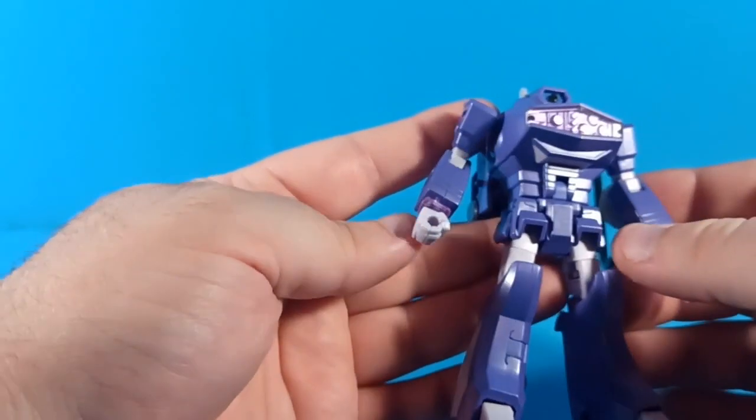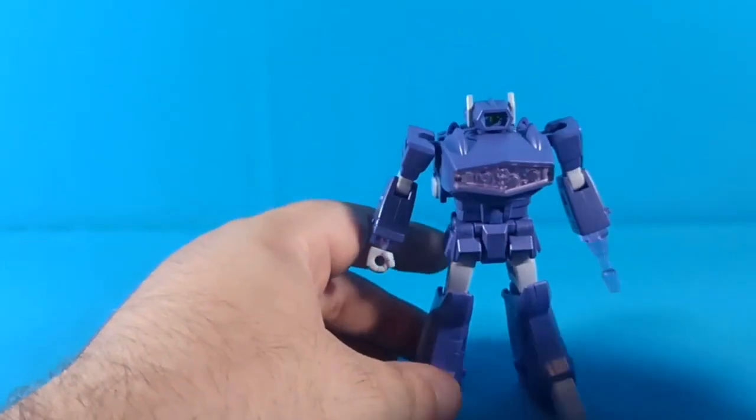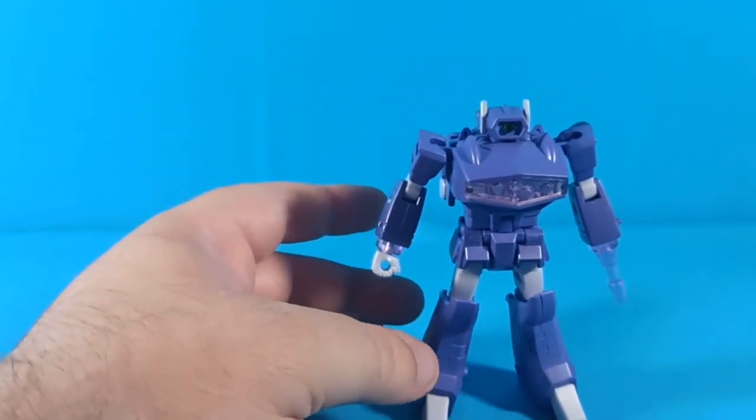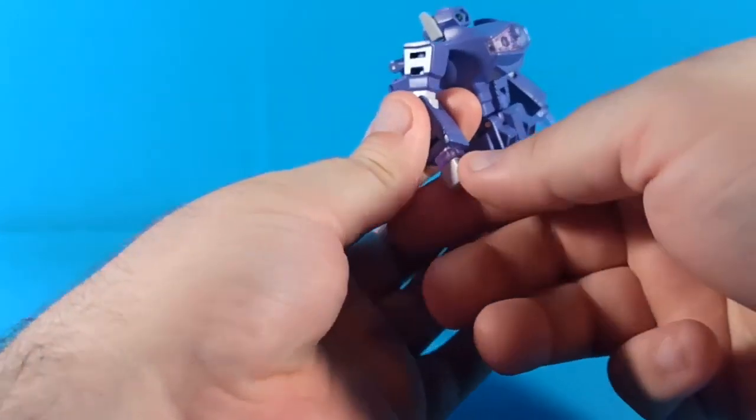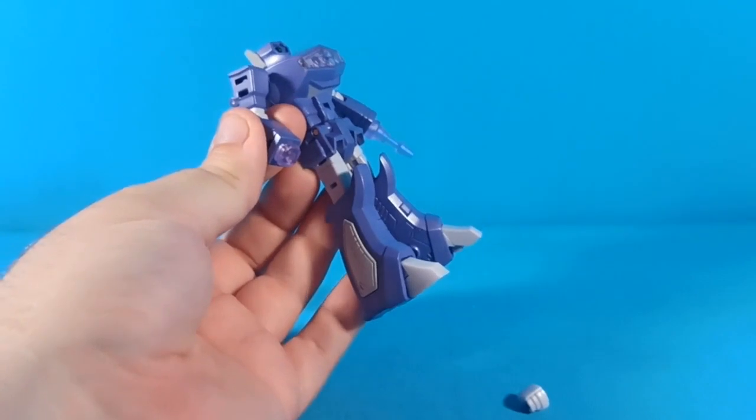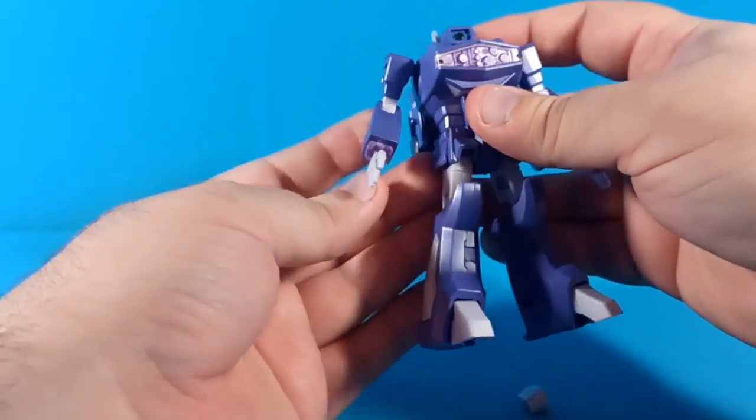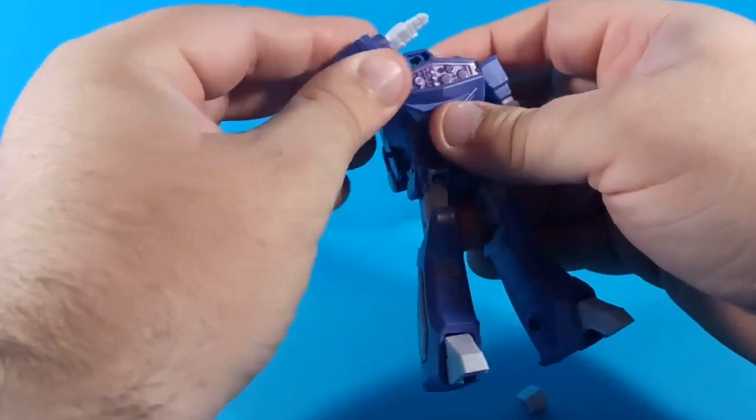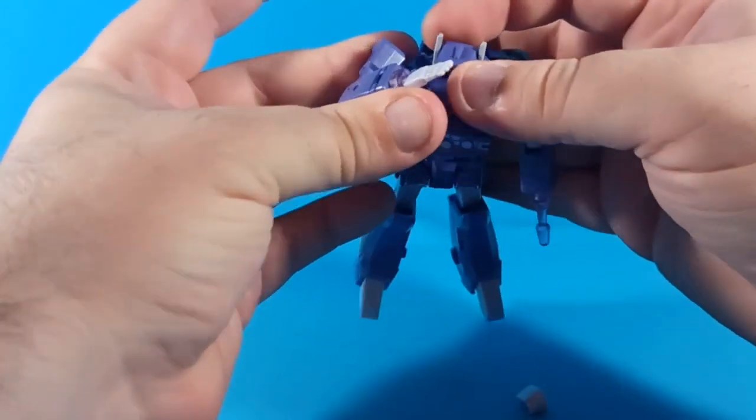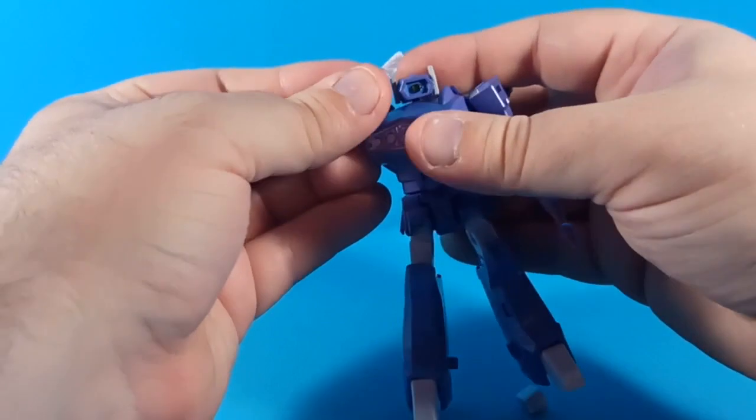Let's talk about his accessories. He comes with an alternate hand that you can just pull off this hand here and slap that guy on there. Only one alternate hand, but now he can do the salute thing, but not really.